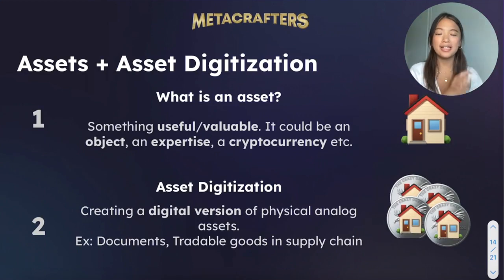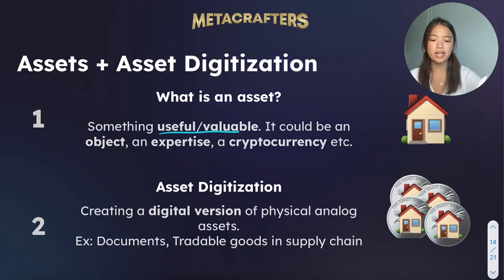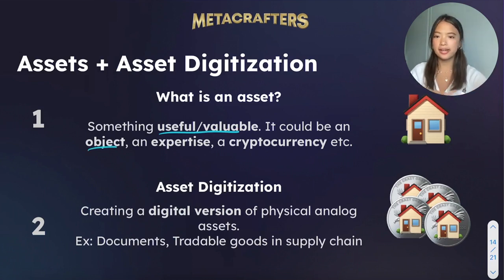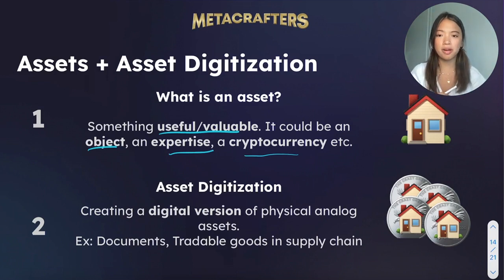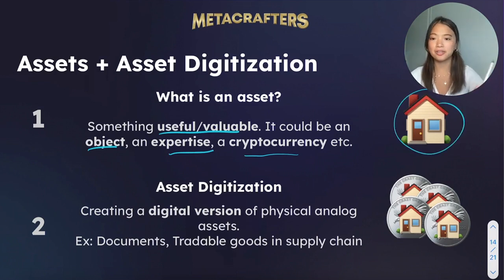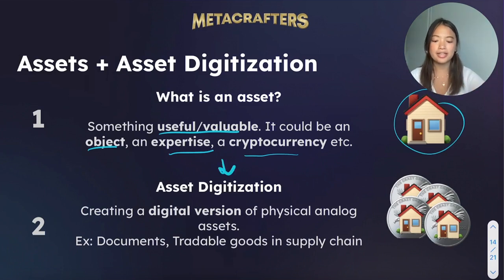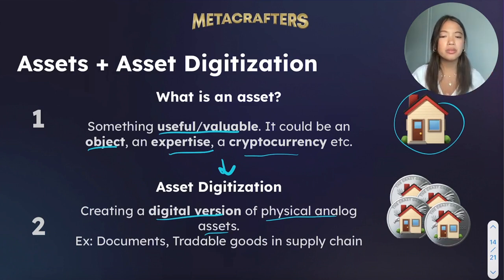What is an asset? An asset is essentially something that is useful and valuable. It could be an object, an expertise, a cryptocurrency, which we just talked about, etc. For example, it could be a house. And asset digitization is creating a digital version of physical analog assets — for example, documents or tradable goods in a supply chain.